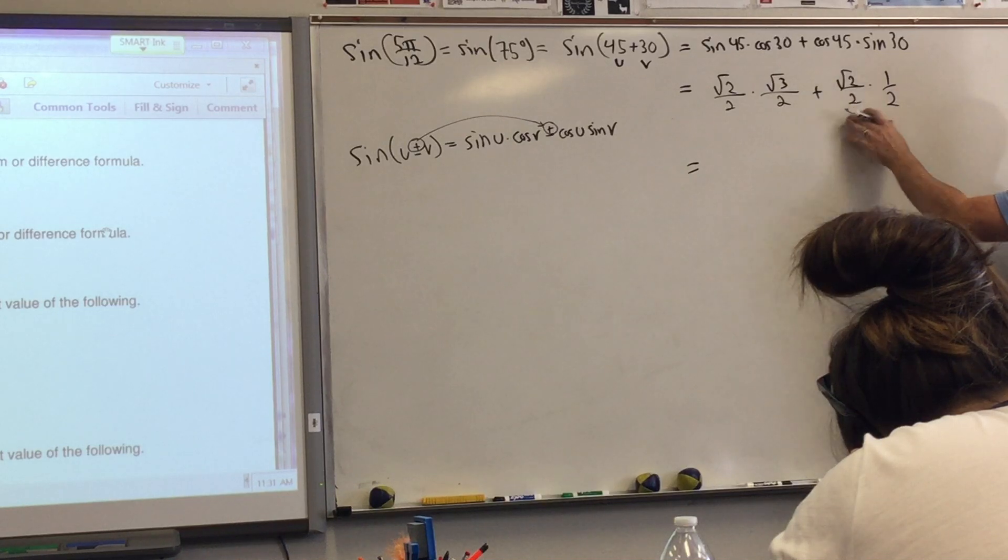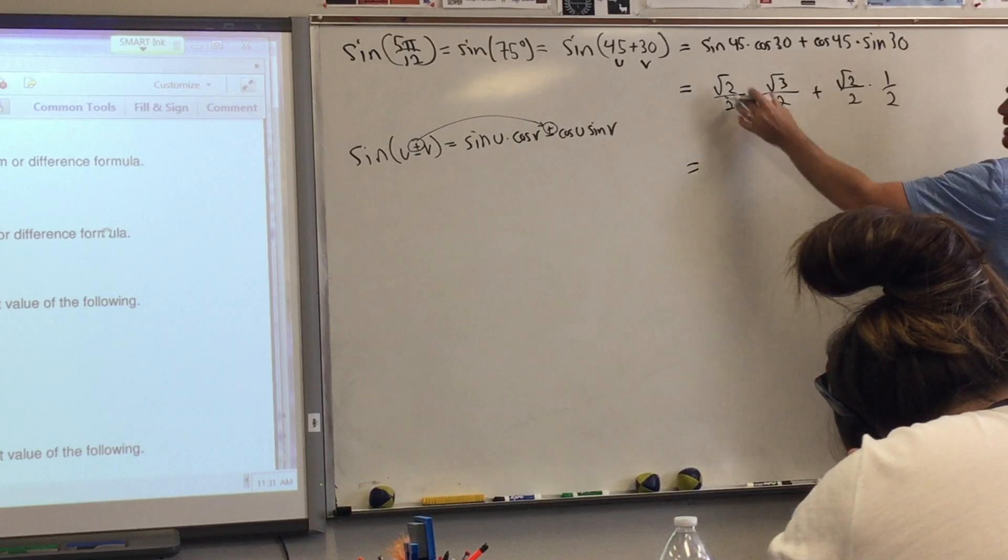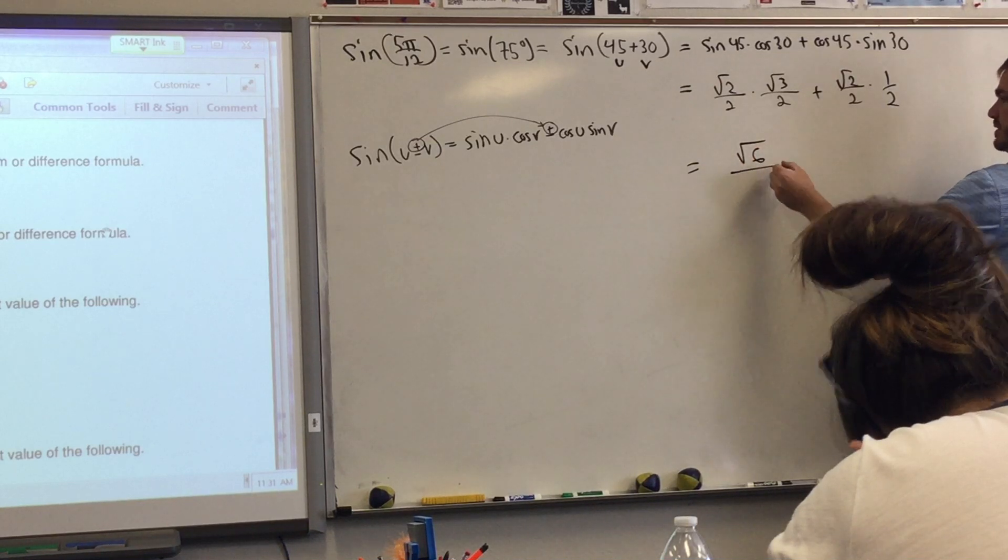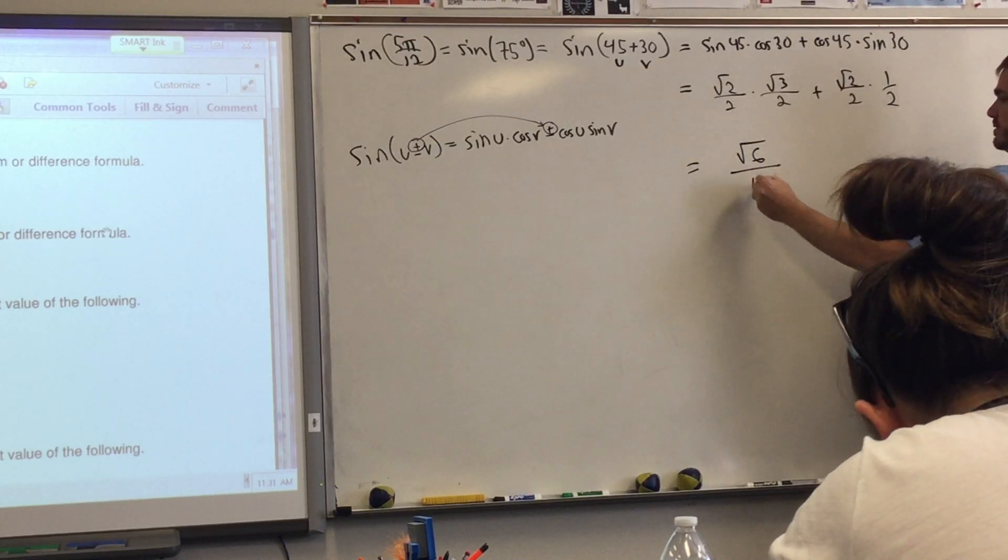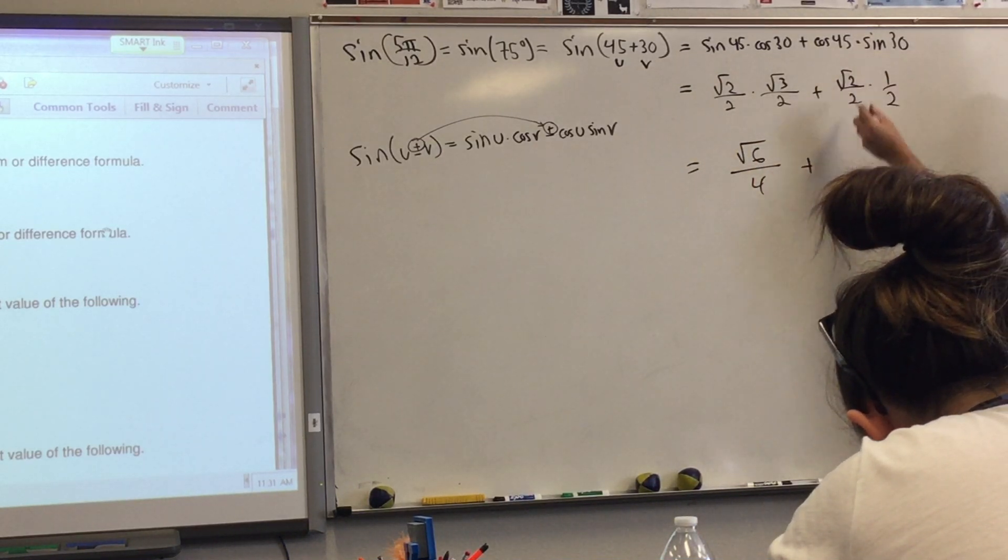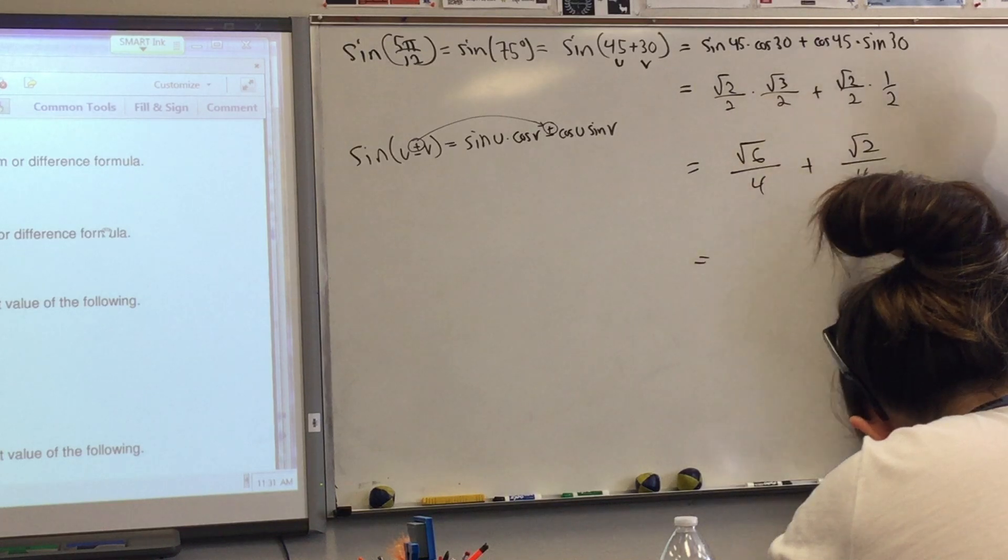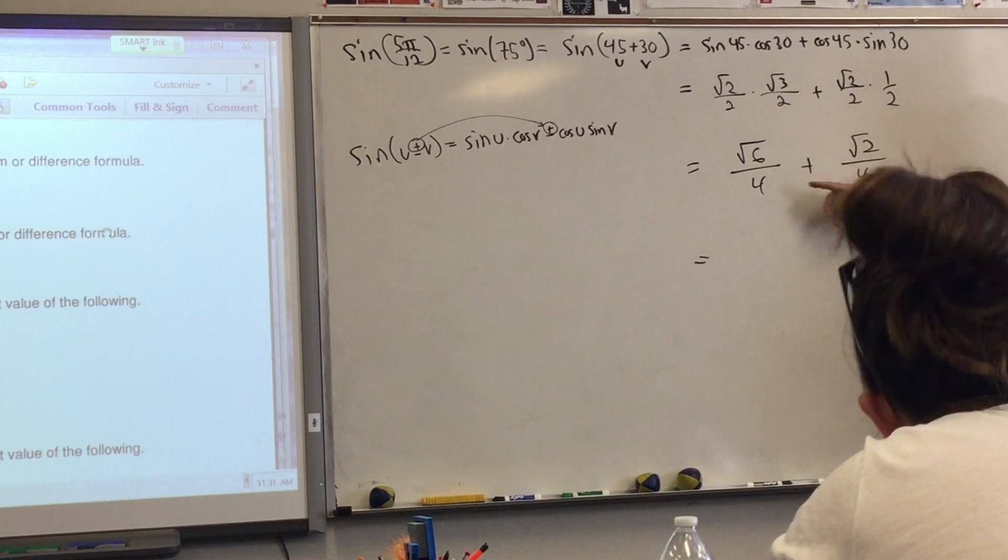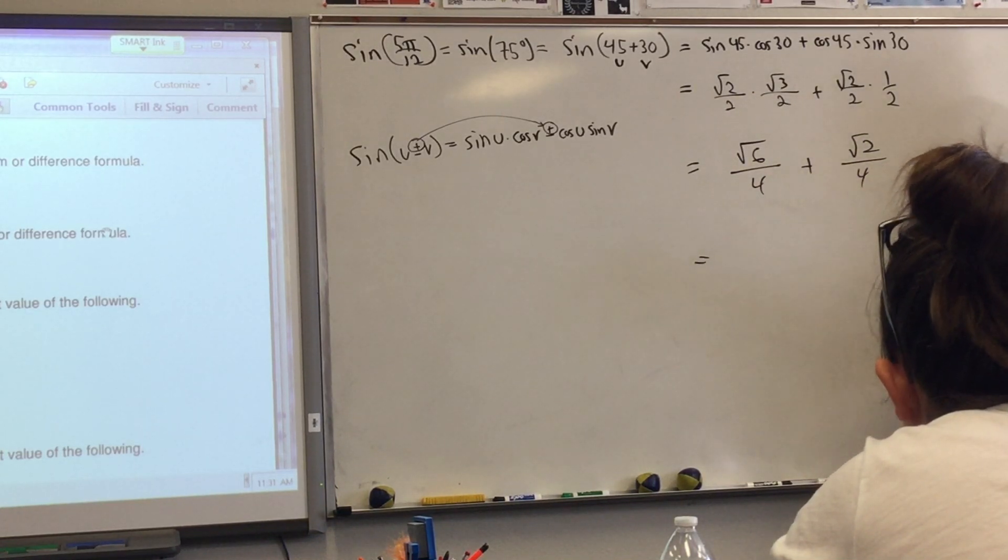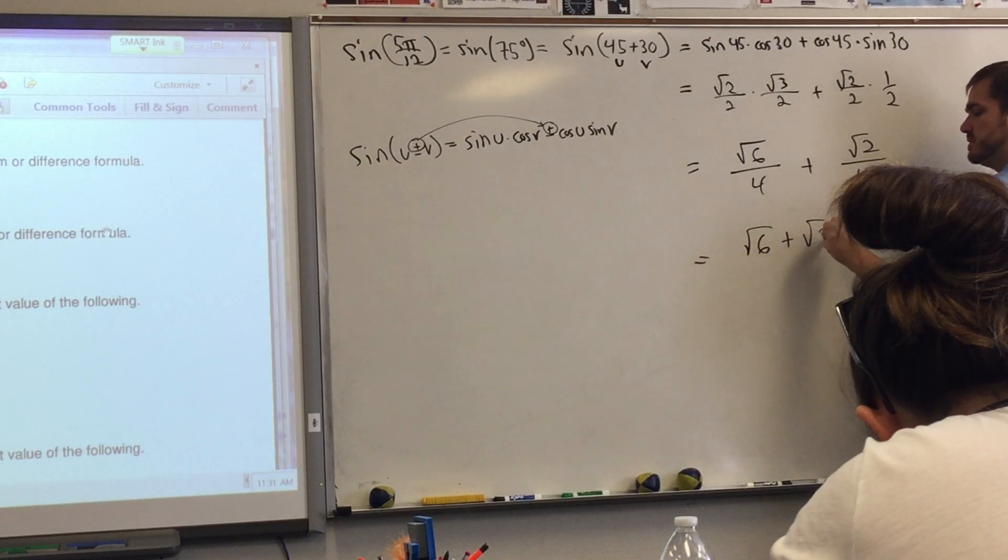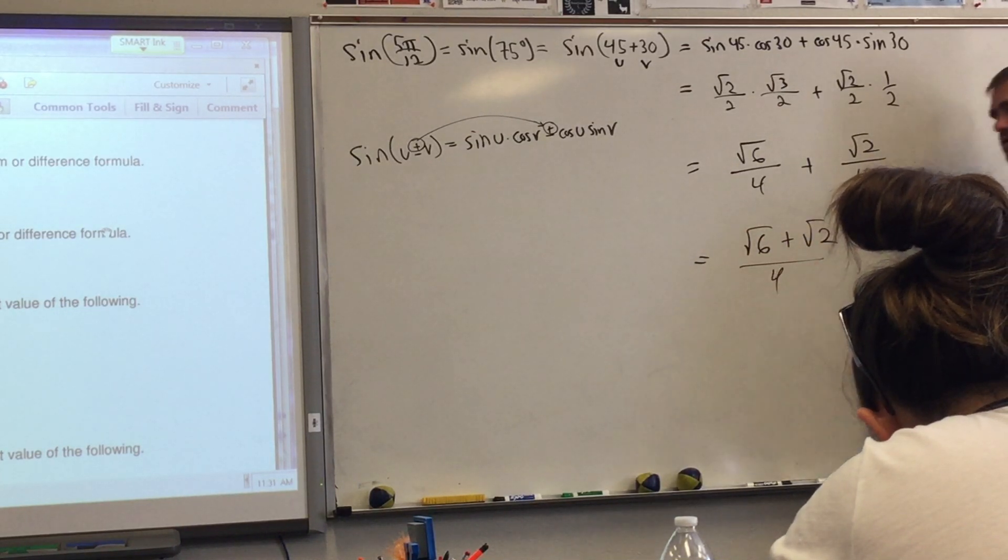Fraction, fraction, plus fraction, and fraction, so the fraction multiplies, you just multiply the numerators. So root 2 times root 3 is root 6, 2 times 2 is 4. Over here, root 2 times 1 is root 2, 2 times 2 is 4. And so I have fraction plus fraction and also I have common denominators that's good so I have square root of 6 plus square root of 2 all over 4.